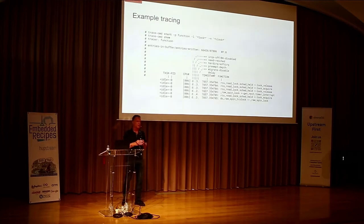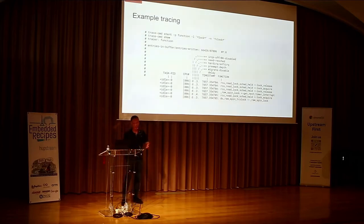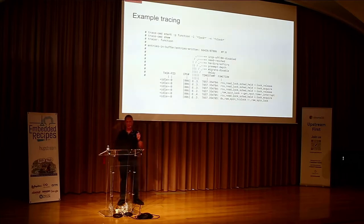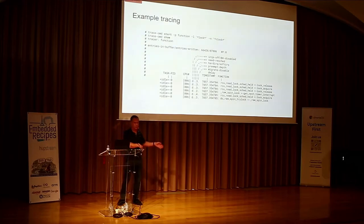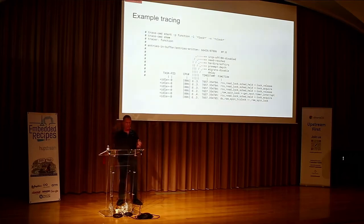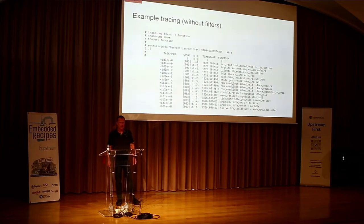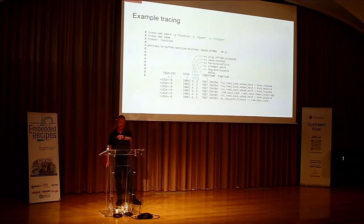Dash L means filtering — I call it limited. Dash F was already taken so I said we'll limit what gets traced. It takes regular expressions or globs. Here I said limit on lock — I just want to see all functions with lock in them. But I found a lot of things with clock in them too, so dash N means no trace. The no-trace always takes precedence, so you can filter: give me all this, and when you say no trace, it removes from it. Then tracecmd show, and that's how easy it is — you don't have to find where TraceFS is mounted; it will mount it for you.